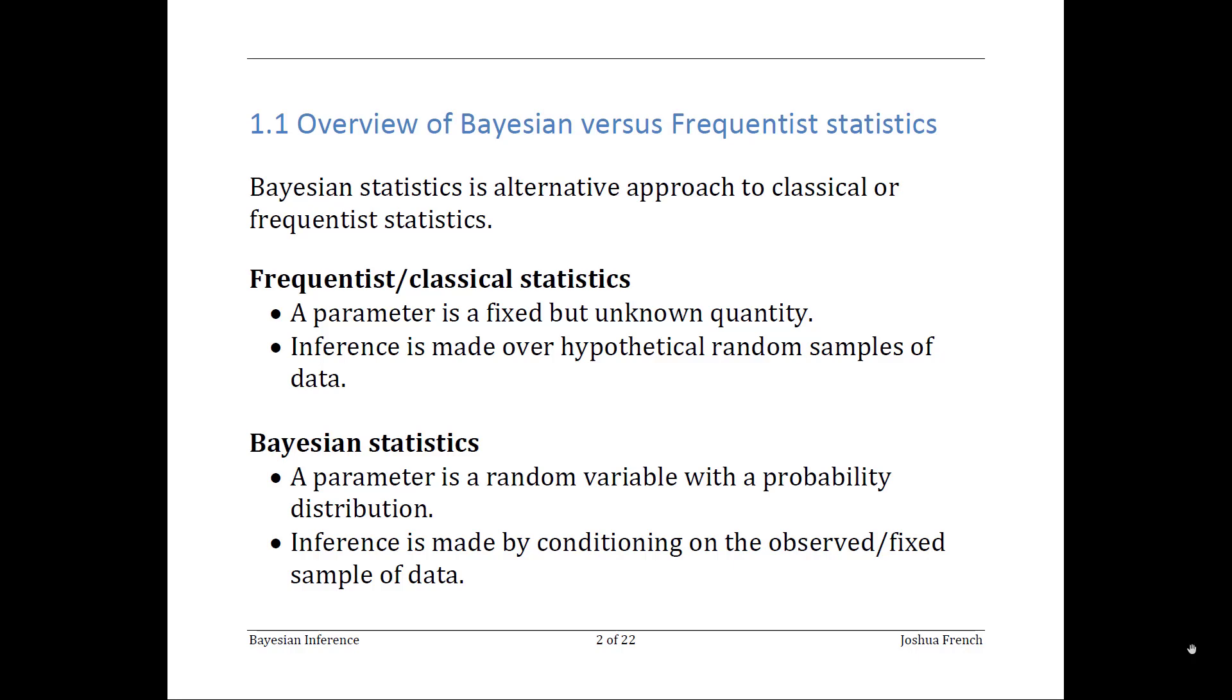As you begin your study in Bayesian statistics, you might wonder what the difference is between Bayesian statistics and whatever you've previously been taught. There are two main philosophies to statistics. They're called Bayesian and frequentist or classical statistics.